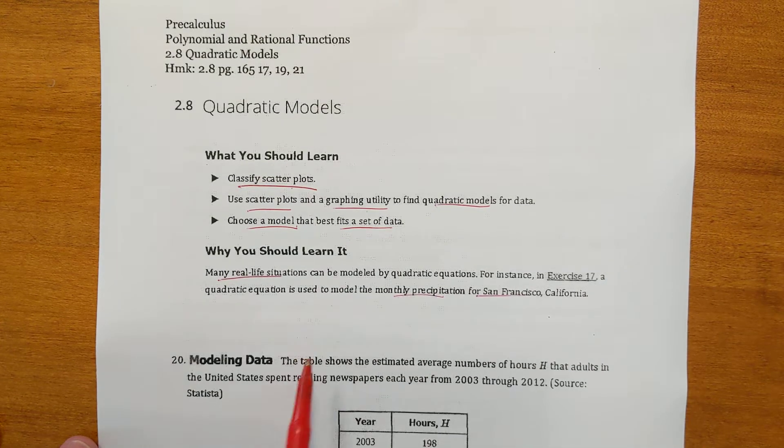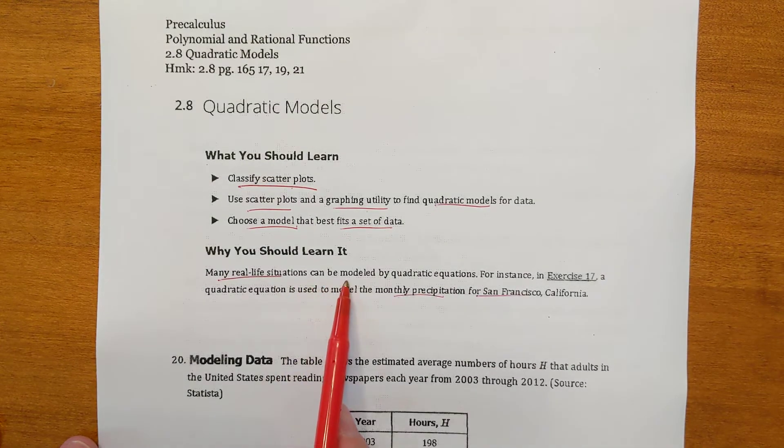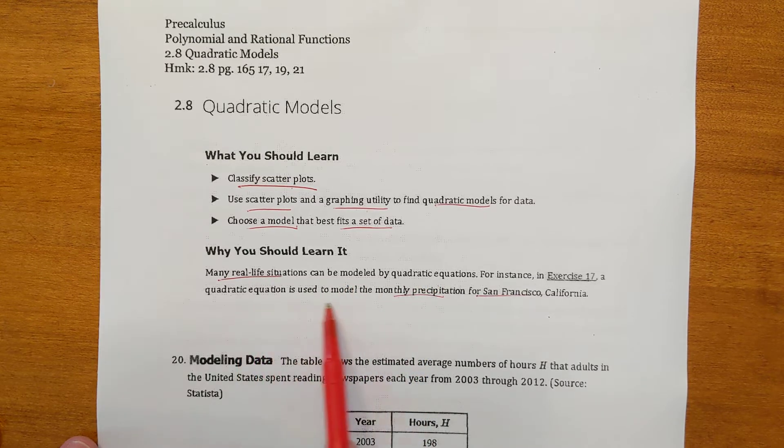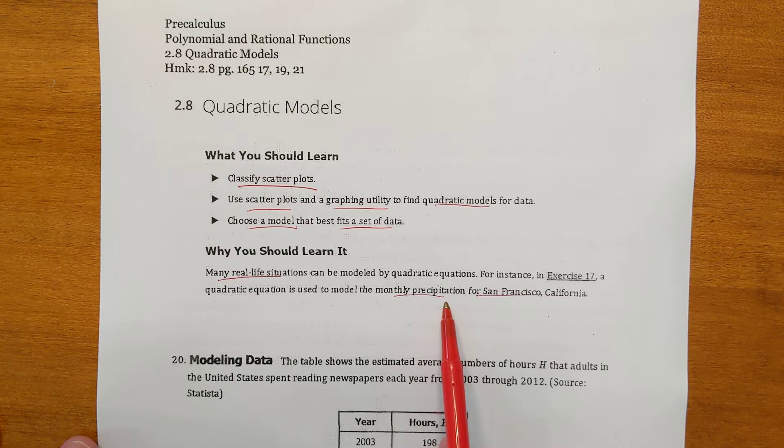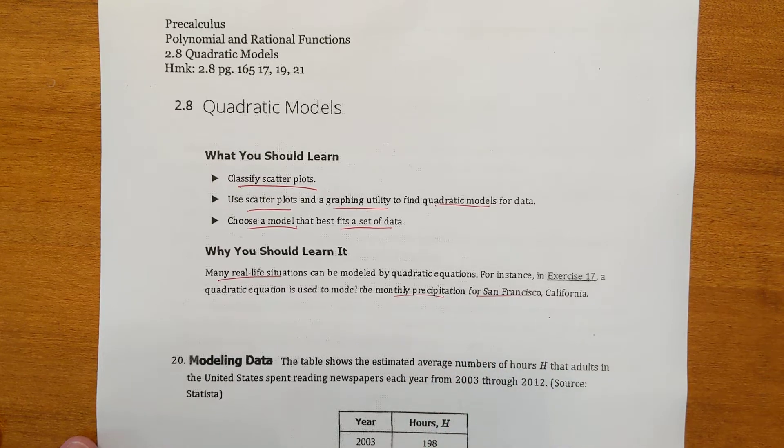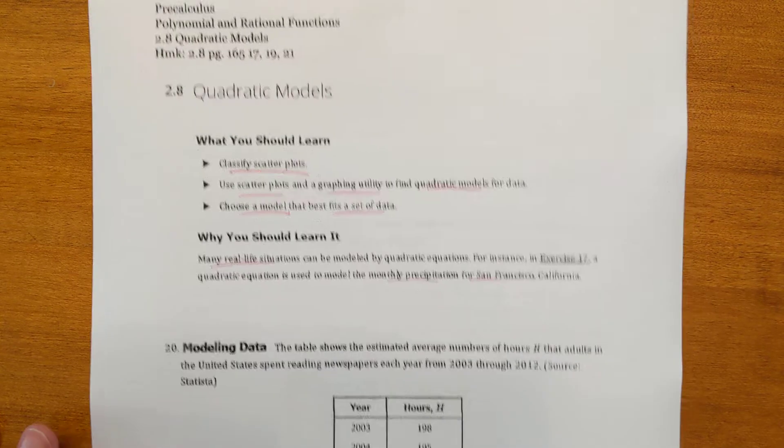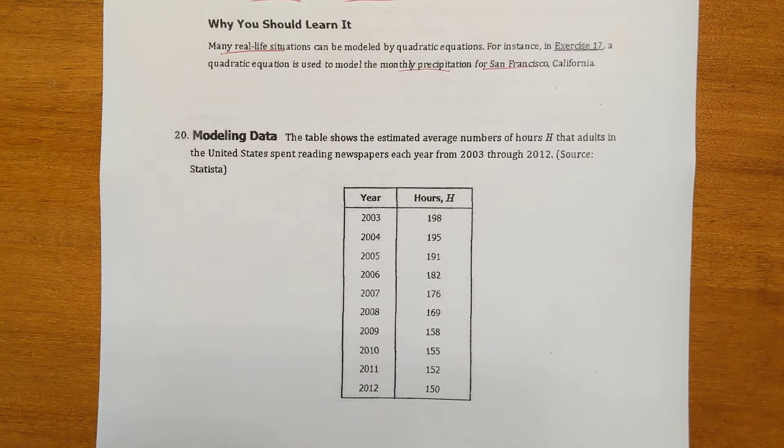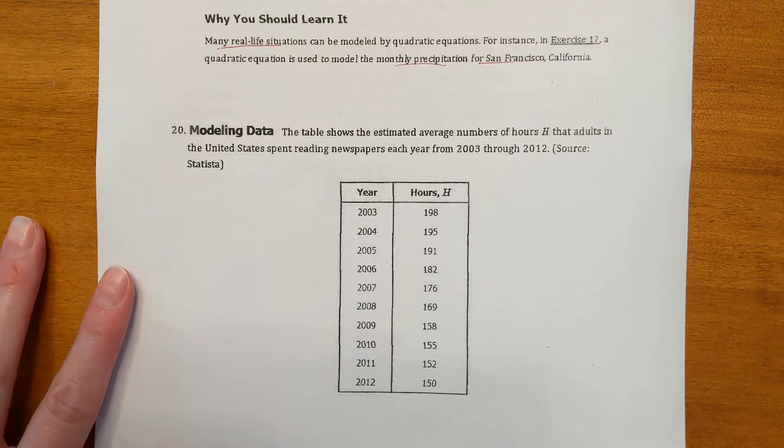Why should we learn this? Because many real life situations can be modeled by quadratic equations. They have a story problem in the book about monthly precipitation for San Francisco, California. We are going to make one ourselves right here. The table shows estimated average number of hours that adults in the United States spent reading newspapers each year from 2003 to 2012.